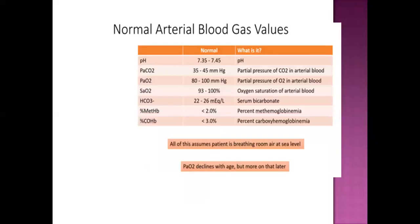Before analyzing ABG results, you need to know the normal ABG values, including normal blood pH, normal pressure of carbon dioxide, normal oxygen saturation of arterial blood, bicarbonate, carboxyhemoglobin, and methemoglobin in percentage.